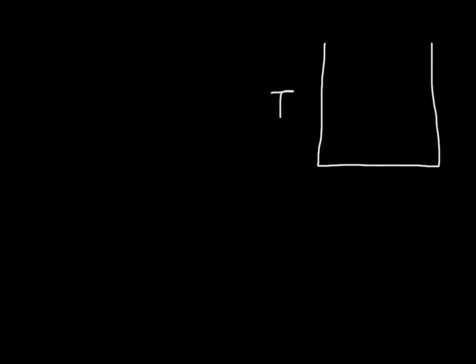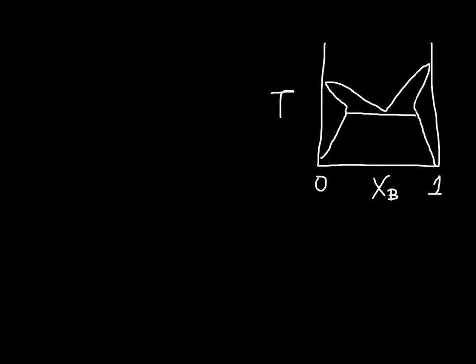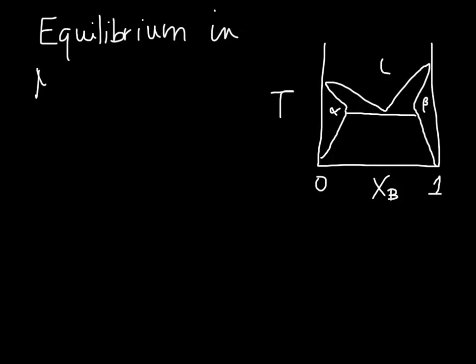We have for a while now been working towards our binary phase diagram, which will tell us the equilibrium composition and phase or phases in a binary system. I will sketch here a eutectic, although we will see that there are lots and lots of ways that this phase diagram could look. What the phase diagram really tells us about are the conditions for equilibrium in multi-component and multi-phase or heterogeneous systems.